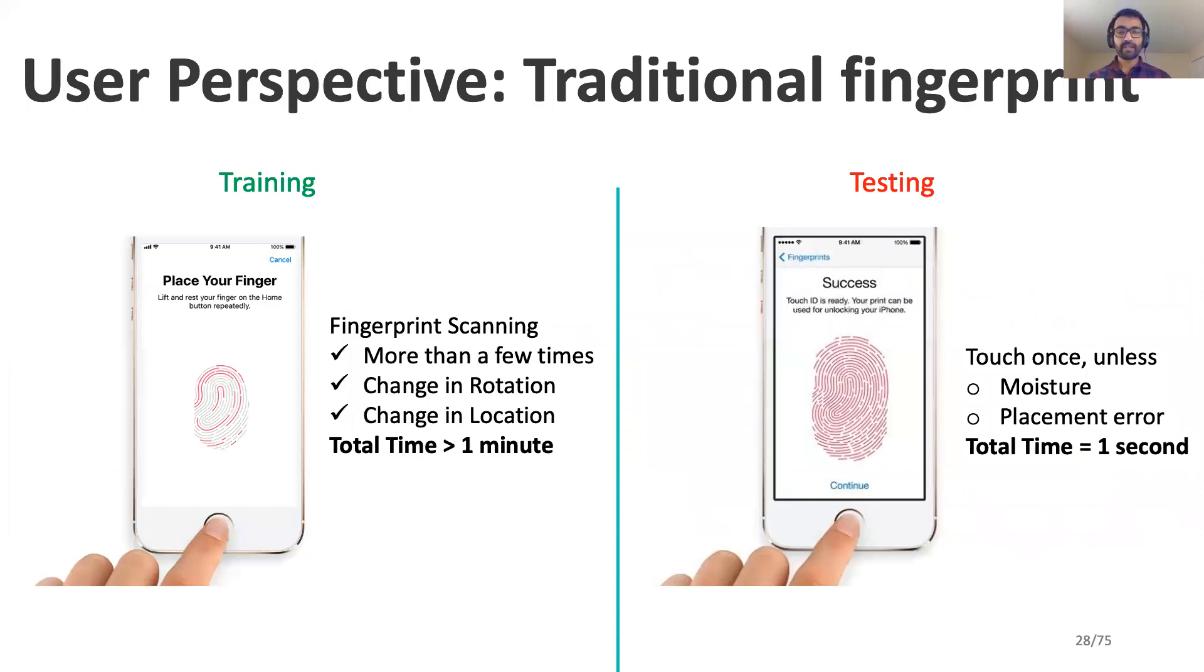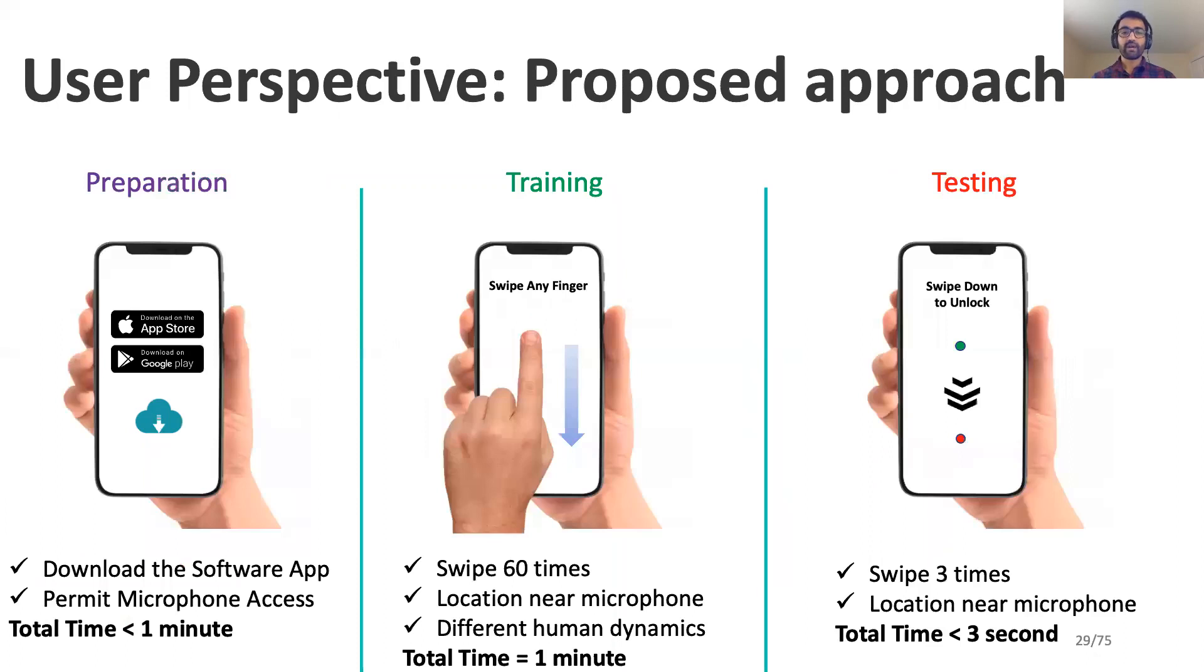If we consider the user perspective of traditional fingerprint scanners, it requires training on diverse samples in terms of rotation and placement. While fingerprint technology can recognize users in one second, its performance is often impacted by moisture or placement errors. For our approach, we imagine a user to simply download the software-based application from Google Cloud or Apple Store. During training, we ask users to swipe 60 times on their smartphone surface. The number of times is based on the current capability of the system, which can be improved in the future. During testing, we ask the same subject to swipe one to three times to unlock their smartphone.